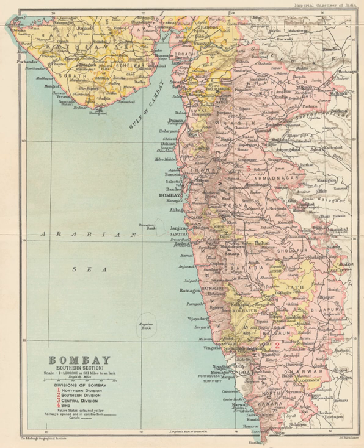In 1960, the designation of the Governor of Bombay was transmuted as the Governor of Maharashtra.